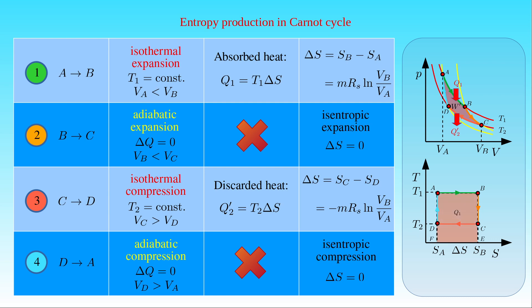The heat Q1 absorbed by the working substance during its isothermal expansion is given by the area of the rectangle with corners A, B, E and F. The heat Q2' rejected by the working substance during its isothermal compression is given by the area of the rectangle with corners D, C, E and F. Since the work W' delivered in the Carnot cycle equals Q1 minus Q2', the area of the rectangle with corners A, B, C and D in the temperature-entropy diagram gives W'.